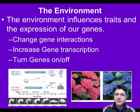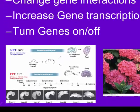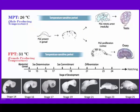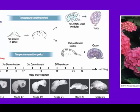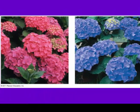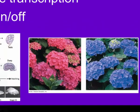One such factor is the environment. Environmental cues such as temperature can influence the development of reptile embryos, changing their gender. Or the pH of the soil can influence the expression of color in hydrangea flowers.